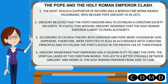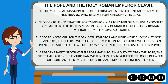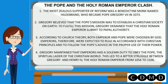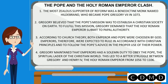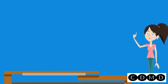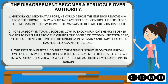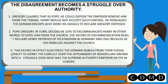The Pope and the Holy Roman Emperor Clash. The most zealous supporter of reform was a Benedictine monk named Hildebrand, who became Pope Gregory VII in 1073. Gregory believed that the Pope's mission was to establish a Christian society on earth. He demanded that the Holy Roman Emperor submit to papal authority. Gregory claimed that as Pope he could depose the Emperor and remove him from the throne. Henry would not accept such control. He persuaded the German bishops, who were his vassals, to declare Gregory deposed. Pope Gregory, in turn, decided in 1076 to excommunicate Henry — that is, to expel him from the church.